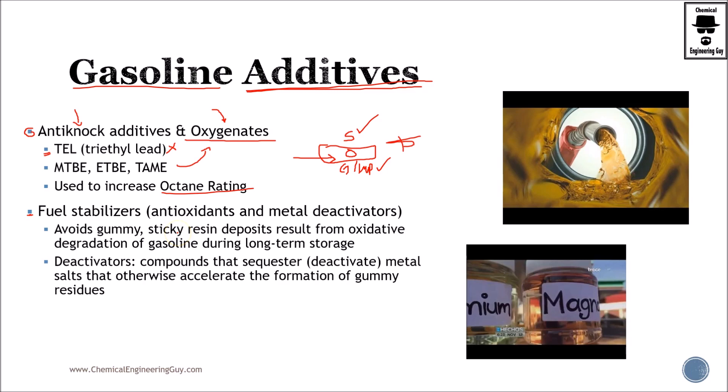Then come fuel stabilizers. The main problem, as you know, with chemicals is that eventually with time and different pressures, oxygen exposure, and so on, there will be some reactions. Fuel stabilizers are essentially antioxidants and metal deactivators. Antioxidants are used to avoid oxidation of gasoline. What you want is a fuel which can oxidize when you want it to, not while you have it sitting in your storage tank.